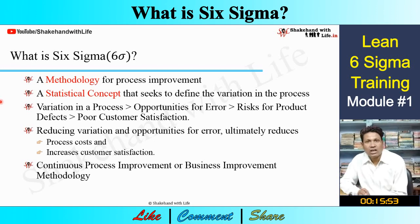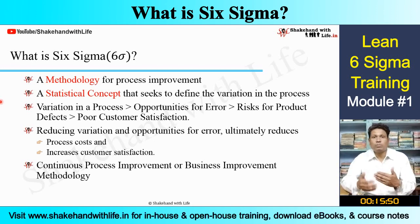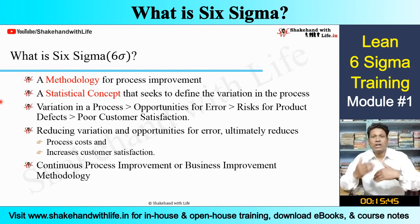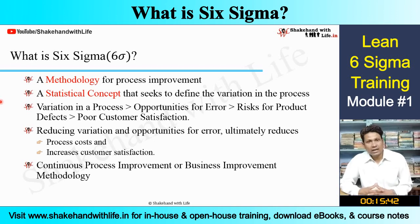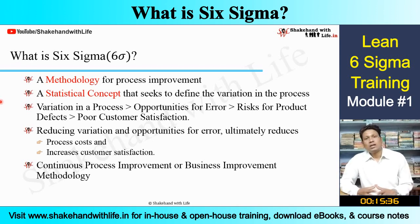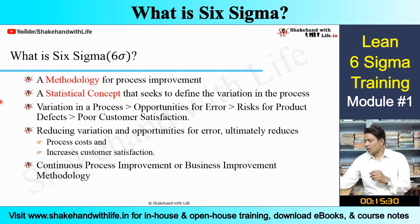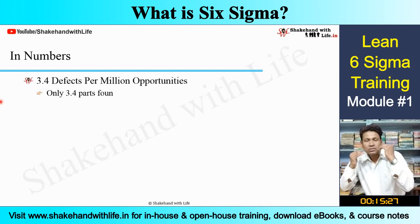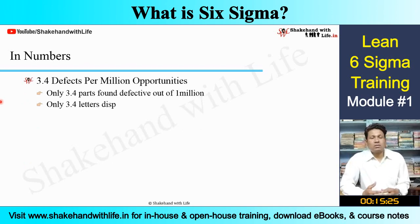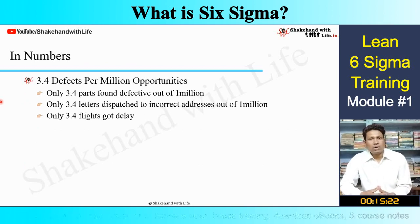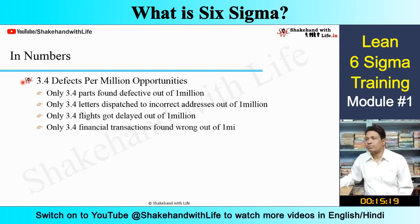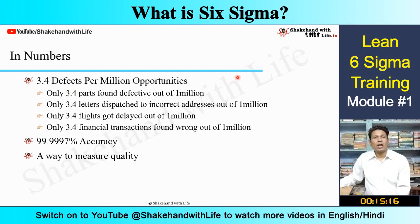Ultimately, Six Sigma reduces process costs by reducing variations, and by reducing variations it increases customer satisfaction. Therefore, Six Sigma is a methodology for continuous process improvement because it continuously reduces variations in the process, and hence it is also known as a business improvement methodology. In numbers, Six Sigma is 3.4 defects per million opportunities. To better understand this, let us take some examples.